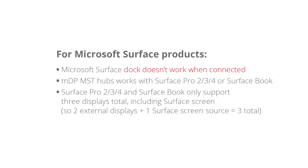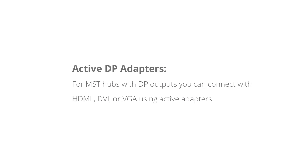However, mini DisplayPort MST hubs work directly connected to Surface Pro 2, 3, 4, and Surface Books. Surface Pro 2, 3, 4, and Surface Book only support up to three displays total, which includes the original Surface screen — meaning two external displays plus the original one, for three total. You can also add active DisplayPort adapters.